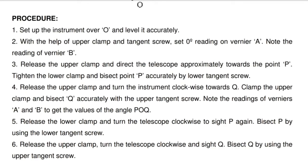Step 4 - Release the upper clamp and turn the instrument clockwise toward Q. Clamp the upper clamp and bisect Q accurately with the upper tangent screw. Note the readings of vernier A and B to get the values of the angle POQ.